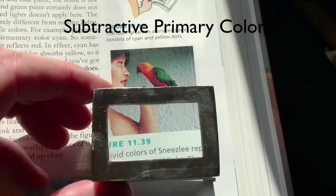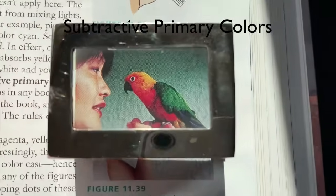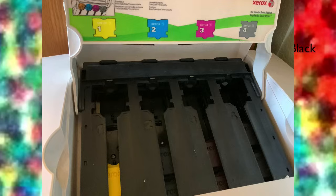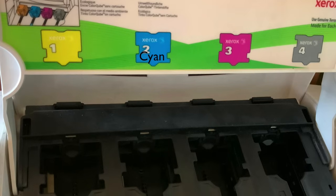Printed images also include black to highlight lines and to give the image appropriate contrast. That's why color printers tend to have four different inks: cyan, yellow, magenta, and black. Good energy.